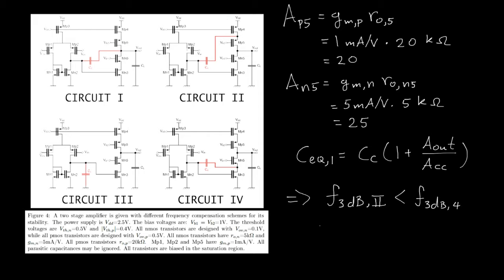And we found earlier that the 3 dB frequency of circuit one has to be the smallest. And the 3 dB frequency of circuit three has to be the largest. So that is the correct ordering.